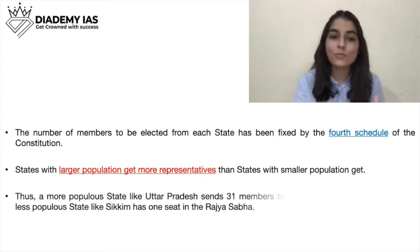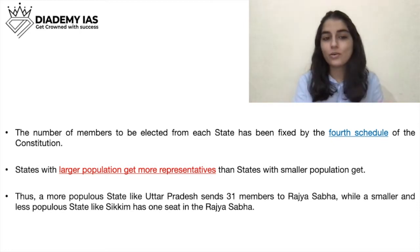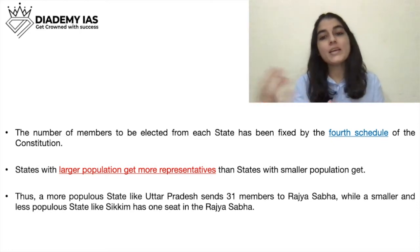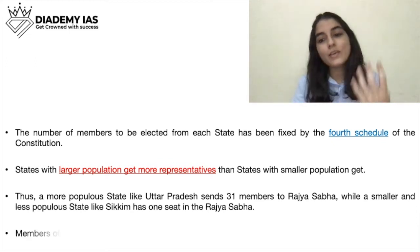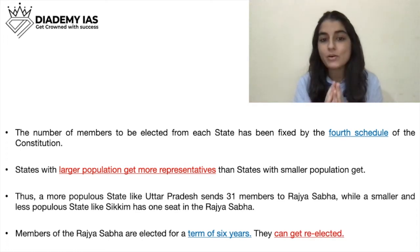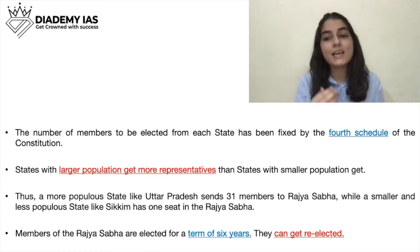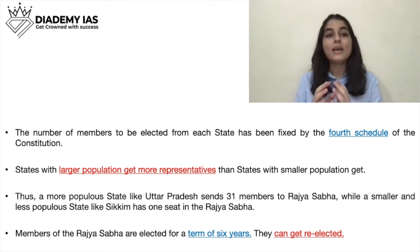States with larger populations have more representatives. UP has more members because of its larger population, and Sikkim has fewer members — only one seat in the Rajya Sabha — due to its small population. The term of Rajya Sabha members is six years, and they can be re-elected.